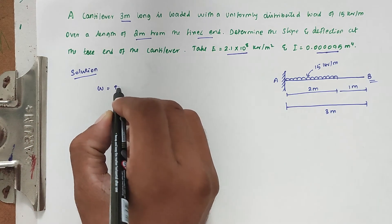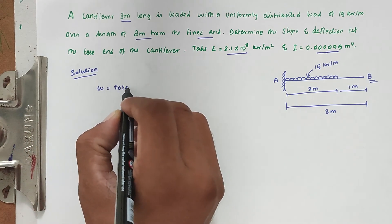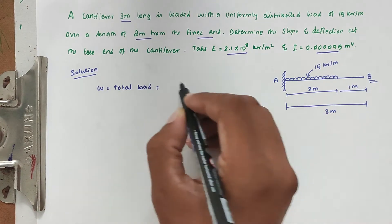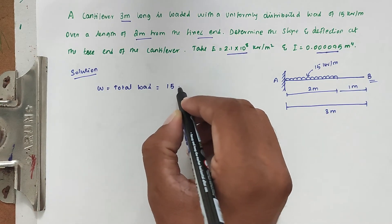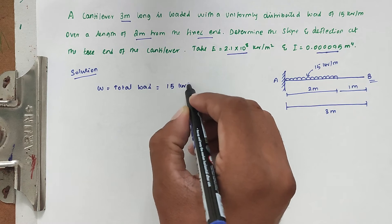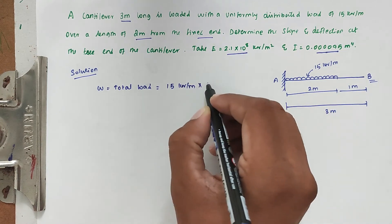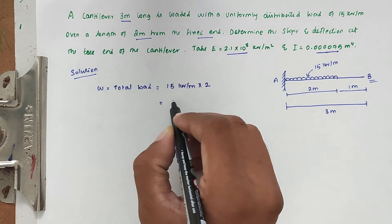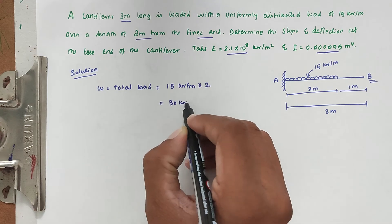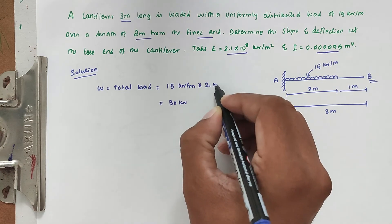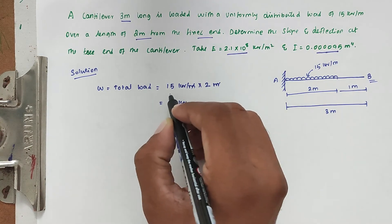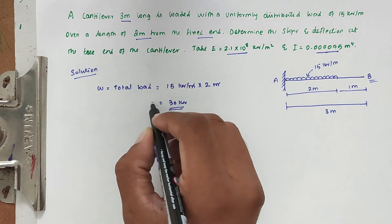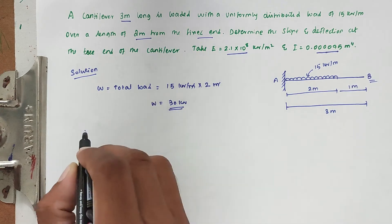First, we find the total load W. The total load is 15 kilonewtons per meter multiplied by the length of 2 meters, so W equals 30 kilonewtons. The meter units cancel, giving us W equal to 30 kilonewtons.